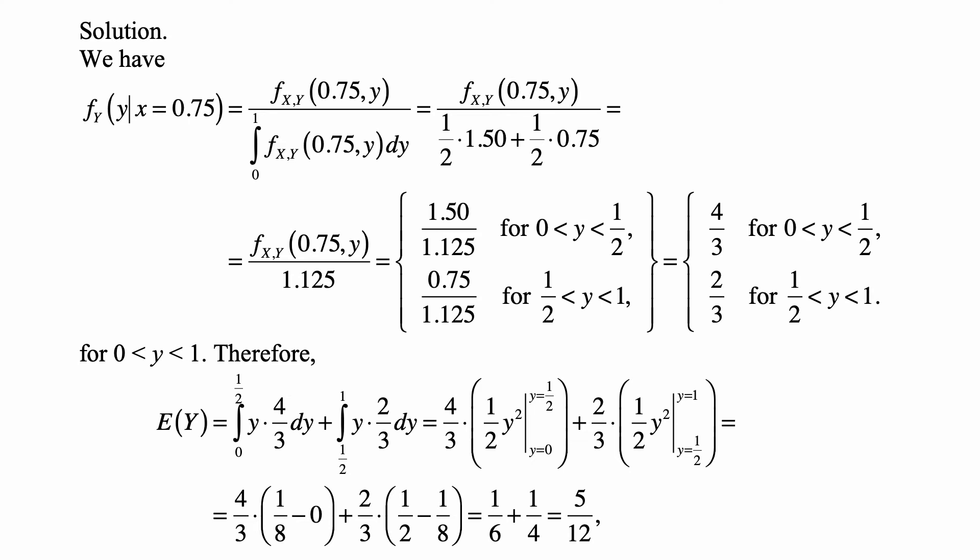the expected value of Y is the integral from 0 to 1/2 of y times 4/3 dy plus the integral from 1/2 to 1 of y times 2/3 dy. And that's equal to 4/3 times 1/2 y squared evaluated from 0 to 1/2 plus 2/3 times 1/2 y squared evaluated from 1/2 to 1.